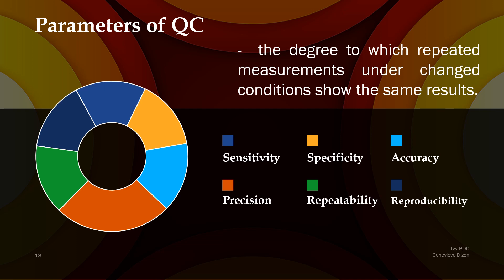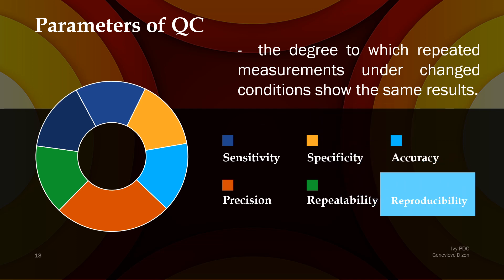For our last definition: the degree to which repeated measurements under changed conditions show the same result. The answer is reproducibility, and the keyword here is changed conditions. In repeatability, everything is the same, while in reproducibility some conditions have changed — for example, a different analyzer, a different medical technologist, or a different reagent is used, or the test is performed in a different laboratory. Repeatability refers to within-day runs, and reproducibility refers to between-day experiments.